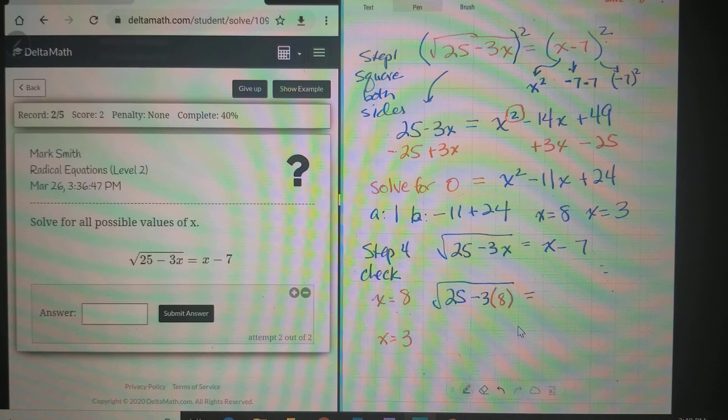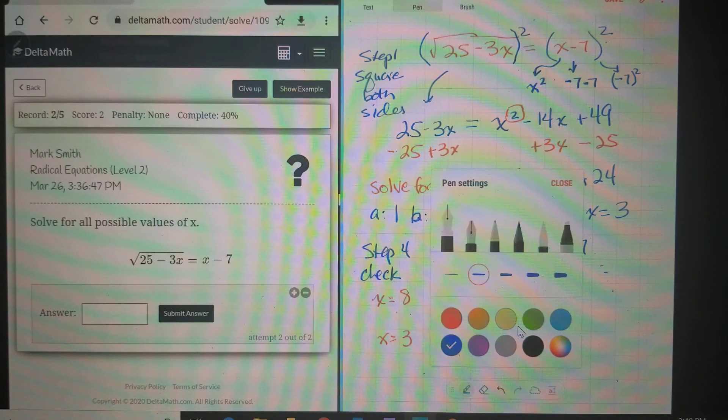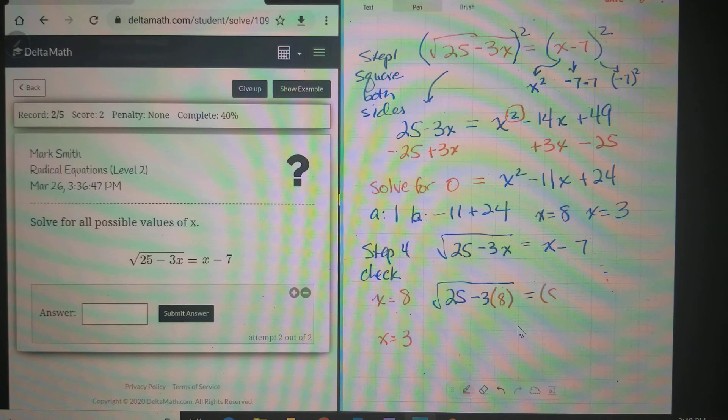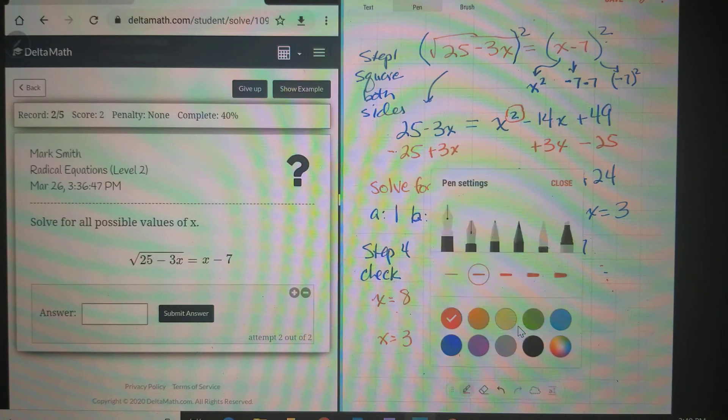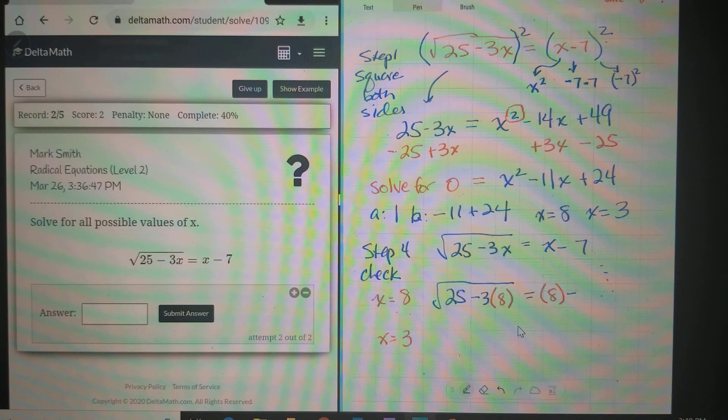Equals, now we're going to put our 8 in here. Notice I always use parentheses just so I don't make mistakes. This is going to be 25 - 24, which is going to be √1 = 1, and we know that's true.